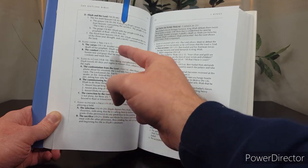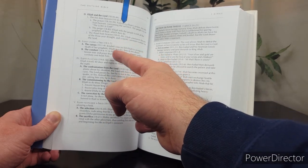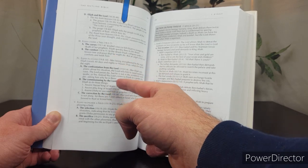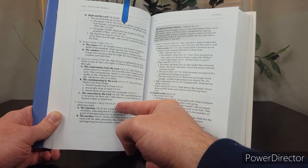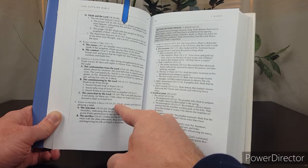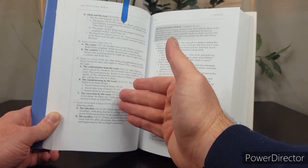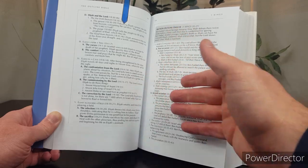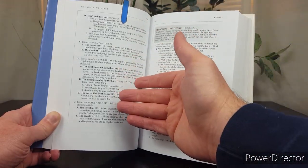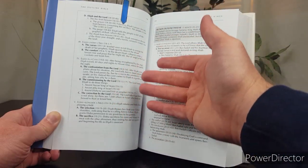So, we have Elijah under a tree, Elijah in a cave, verses 19 through 21, Elijah alongside a field. Every passage in the Bible is organized in an outline form like this.